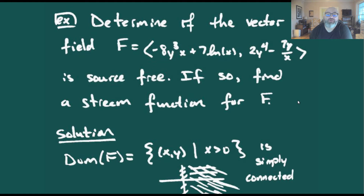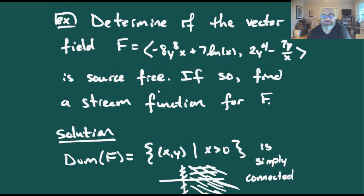So, if we're given a vector field f that looks like minus eight y cubed x plus seven natural log of x, and two y to the fourth minus seven y over x, we want to determine if that thing is going to be source-free. And if so, can we find the stream function for f?